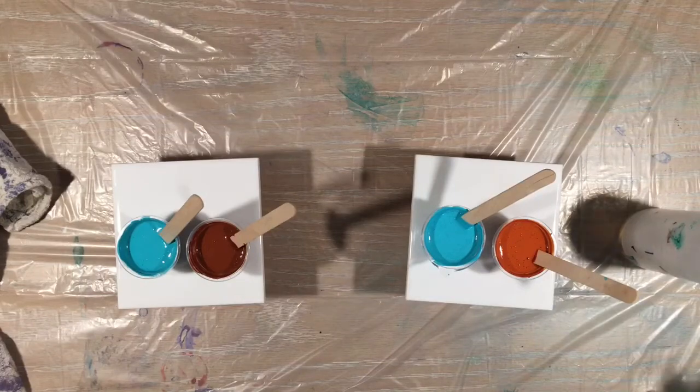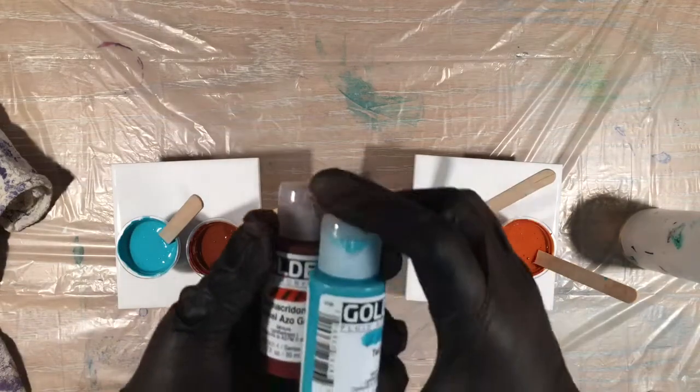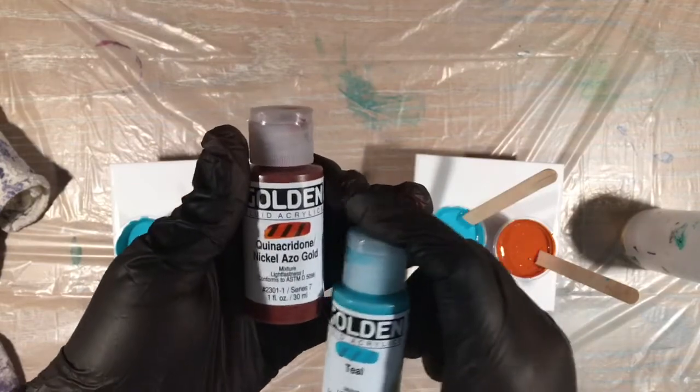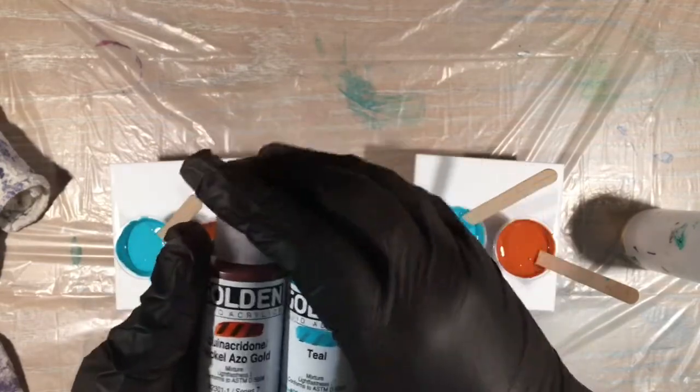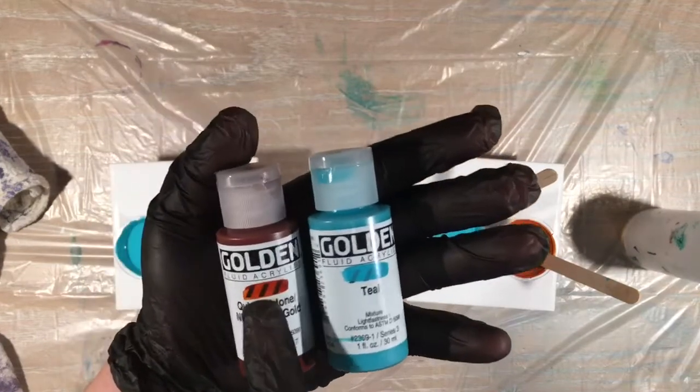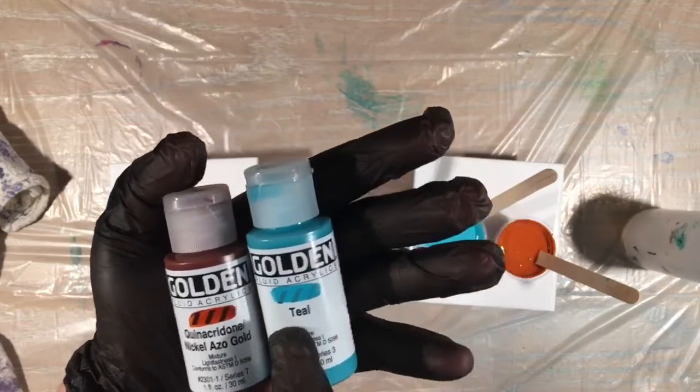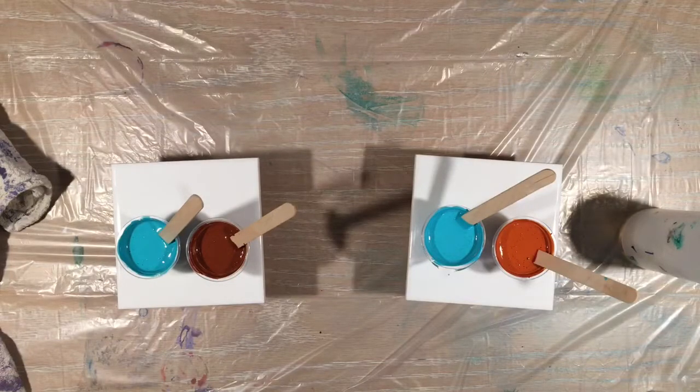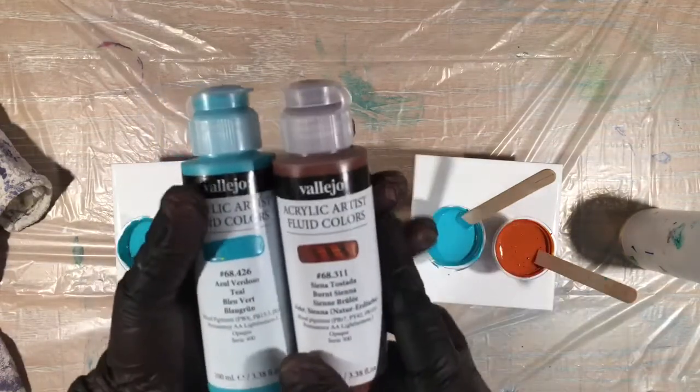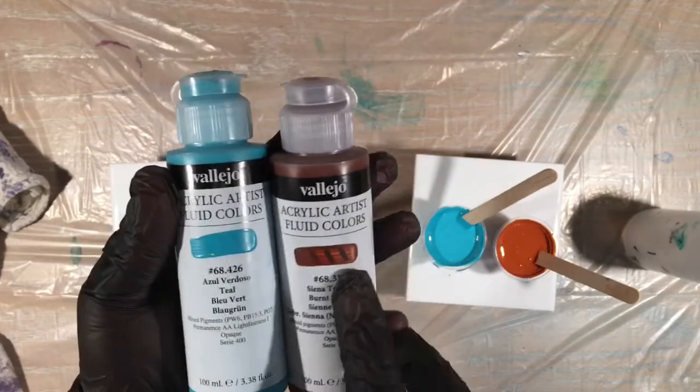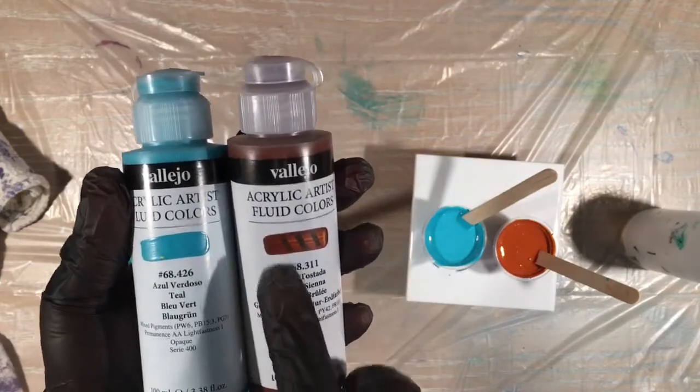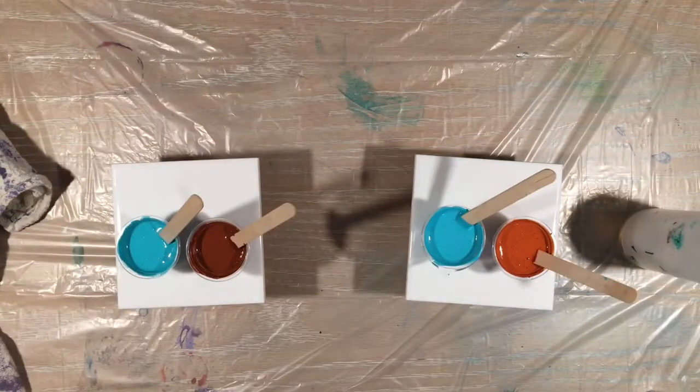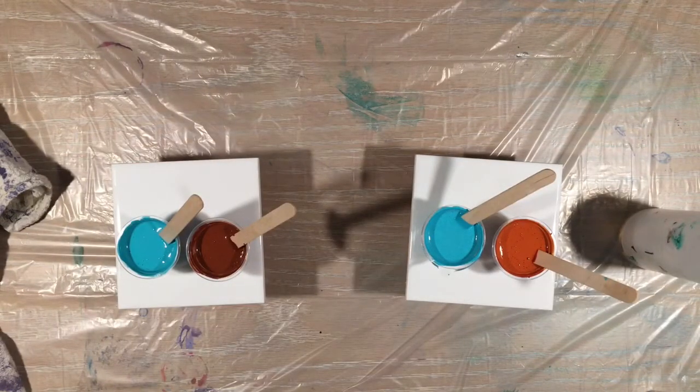And then for the golden acrylics, I have again the teal and the Quinacridone Nickel Azo Gold. Now the difference between these two paints is the brown is very transparent, and the teal is not. But for Vallejo, the teal is really opaque, and the Burnt Sienna is semi-transparent. So it'll be interesting to see how this works out.